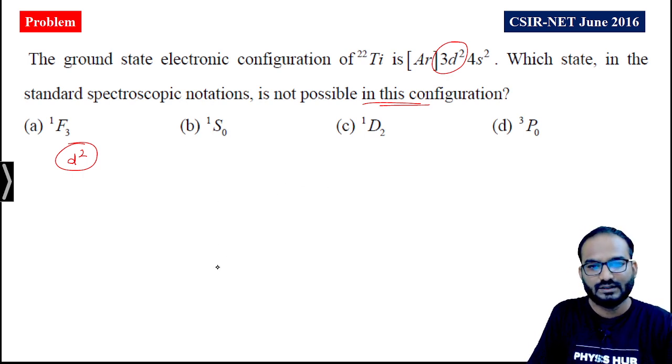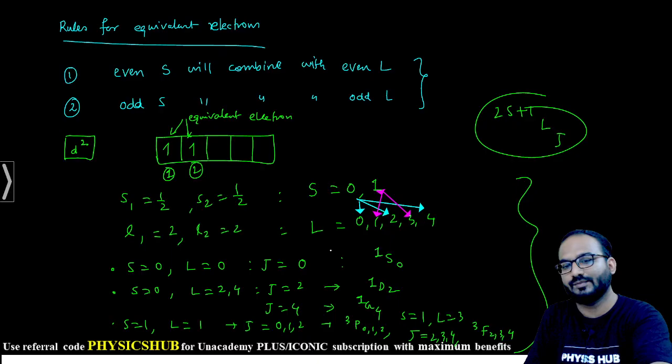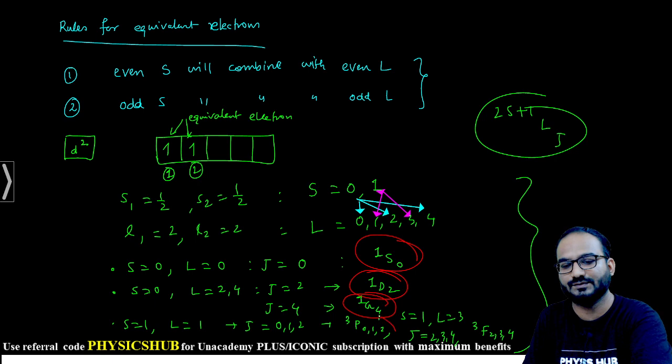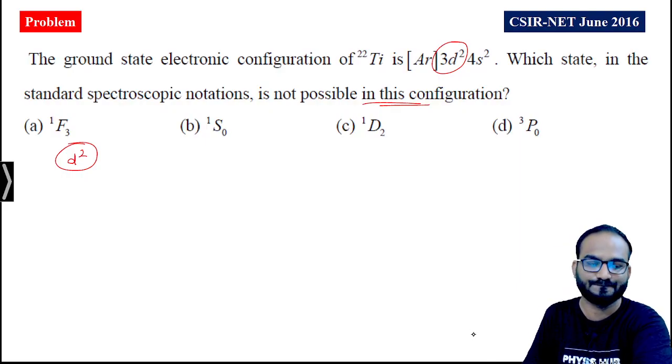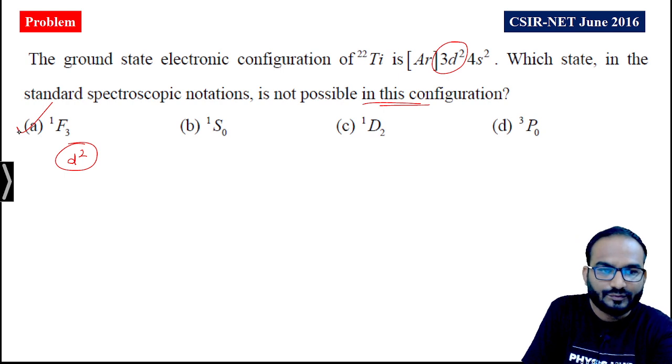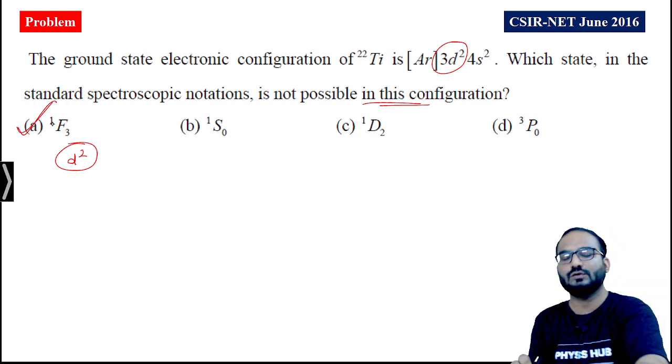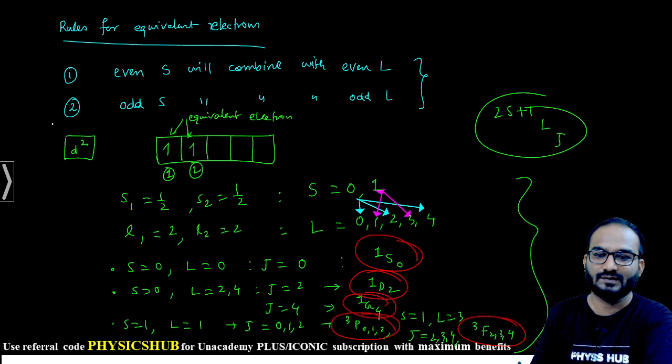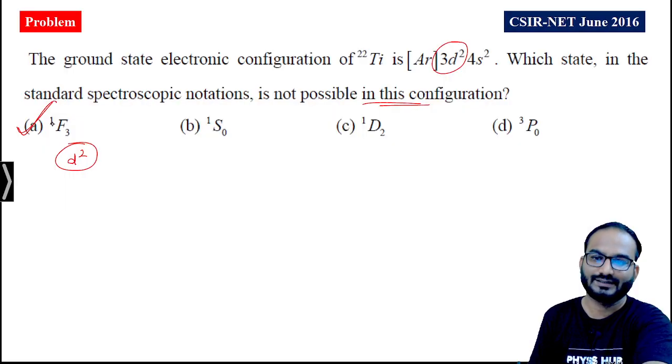Which of these terms is not appearing here? You can see we get ¹S₀, ¹D₂, ¹G₄, ³P₀₁₂ and ³F₂₃₄. So which one is not there? ¹F₃ - we did not see this in our calculation. So ¹F₃, option A will be the correct option. I hope you have understood how to calculate the spectroscopic term symbol for equivalent electrons.